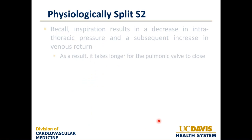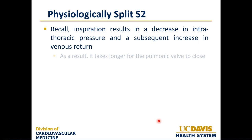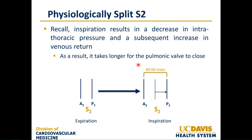Let's explore a physiologically split S2 in more detail. Inspiration results in a decrease in intrathoracic pressure and a subsequent increase in venous return, so it takes longer for the pulmonic valve to close. During inspiration, the pulmonic valve closes later such that there's a 40 to 60 millisecond difference between A2 and P2 — this is appreciable by the human ear. Similarly, right-sided murmurs such as tricuspid regurgitation increase with inspiration due to the increase in venous return to the right side of the heart. Right-sided murmurs always increase with inspiration.